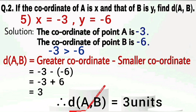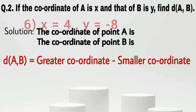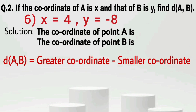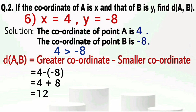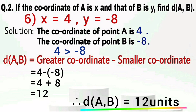For the sixth case, X equals 4 and Y equals minus 8. The coordinate of point A is 4 and the coordinate of point B is minus 8. Since 4 is greater than minus 8, the distance between A and B equals greater coordinate minus smaller coordinate: 4 minus (minus 8). Minus minus becomes plus, so 4 plus 8 equals 12. Therefore the distance between A and B is 12 units.